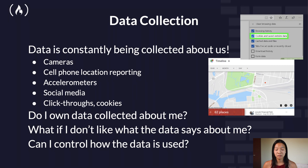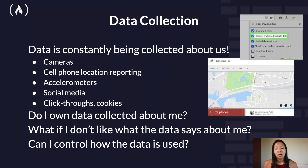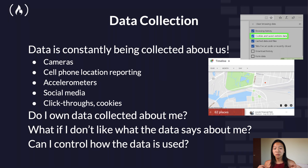Much of the ethical use of data is actually shaped by human subject research. How do people get this data? Data is constantly being collected about us, whether it's your cameras, your cell phone location reporting, your accelerometers, social media, click-throughs, or even your cookies. And questions that really get asked are: do I own the data that gets collected about me? What if I don't like what my data says about me? And how can I control how this data is used? There's actually been a lot of recent discussion about all of these questions.